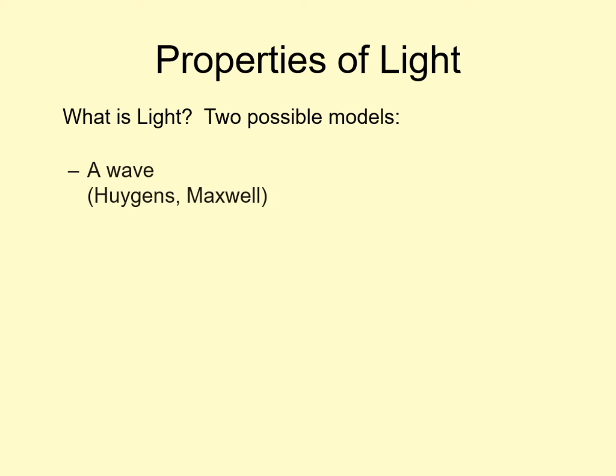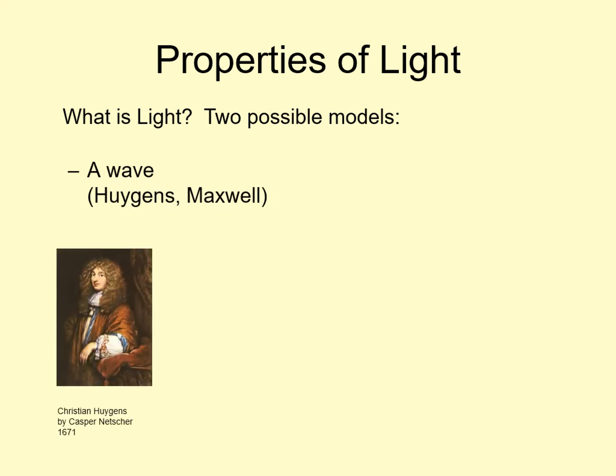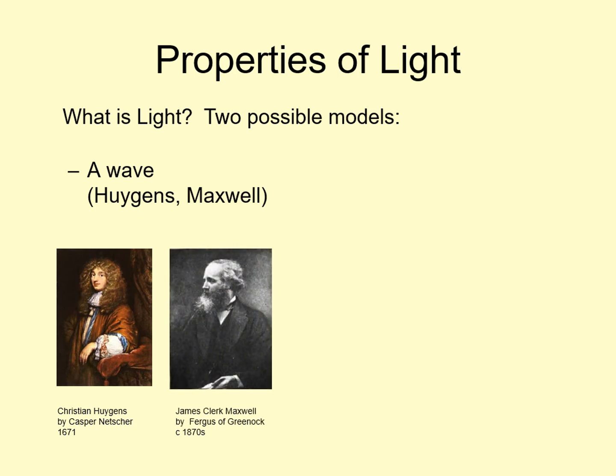One idea is that light is some sort of wave. One of the first people to do serious work on this was Christian Huygens, a contemporary of Isaac Newton. Another big name in understanding light waves was James Clerk Maxwell, one of the smartest physicists of the 19th century. He figured out that you could describe light mathematically from the equations that described electricity and magnetism.